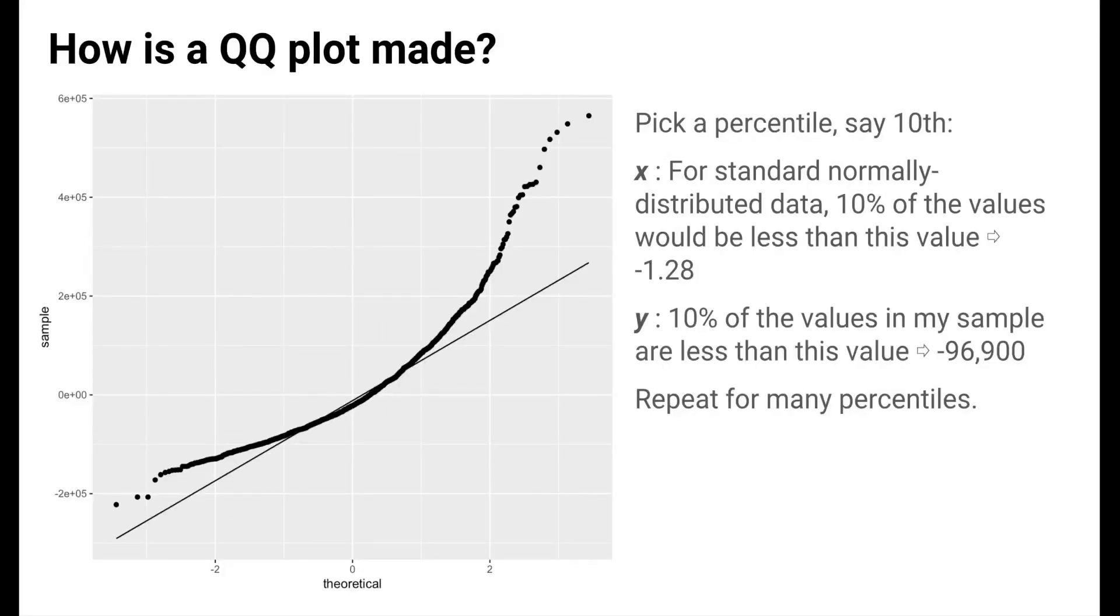How is a Q-Q plot made? Each point on a Q-Q plot is determined as follows. We'll pick a percentile value, say the 10th percentile. The x value of a point uses the theoretical shape of a standard normal distribution, which has mean zero and standard deviation one. This is why the x-axis is labeled theoretical. We get the x value by asking, for standard normally distributed data, 10 percent of the values would be less than what value? This value is negative 1.28.